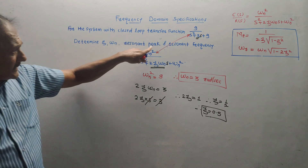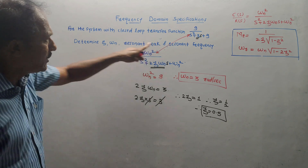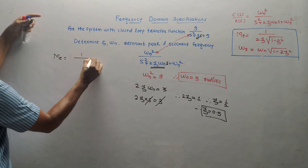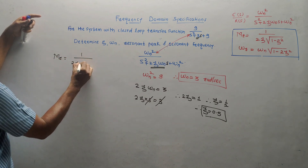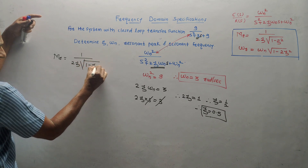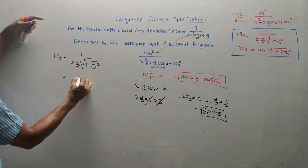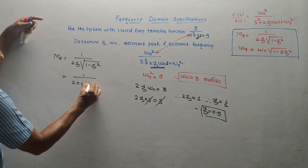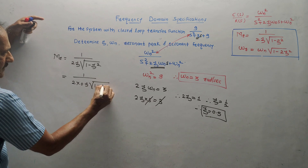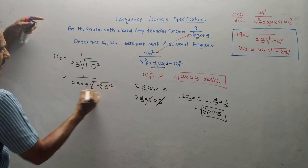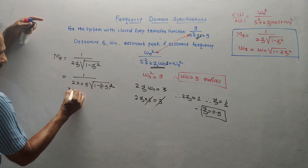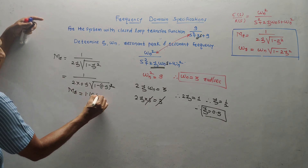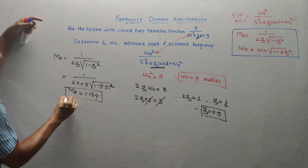Next, calculate the resonant peak Mr. We have the ready-made formula: Mr = 1 upon 2ζ√(1 − ζ²). Simply put the value of zeta: it is 1 upon 2 × 0.5 × √(1 − 0.5²). Solving this using the calculator, the value of Mr is 1.154. This is the value of the resonant peak.